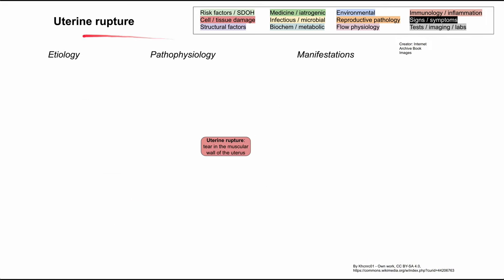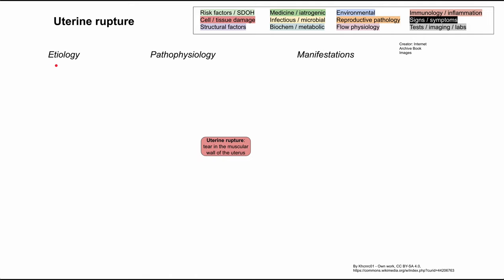Uterine rupture is defined as a tear in the muscular wall of the uterus. There are a lot of things that predispose you to getting this tear in the muscular wall of the uterus, and it can be pretty catastrophic. So it's worth knowing the etiologies and the risk factors for this.